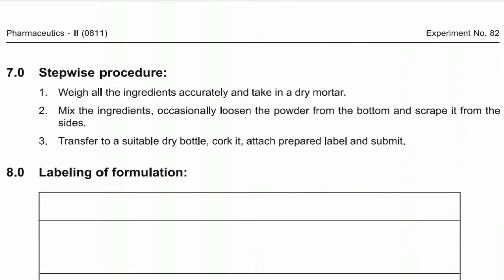Now let's go through the procedure. We just have to weigh all the ingredients required for preparing the powder and take them in a dry mortar. We mix the ingredients, occasionally loosening the powder from the bottom and scraping it from the sides with a spatula. Finally, the powder mixture is submitted in a suitable dry wide-mouth container — cork it, attach the prepared label, and submit.